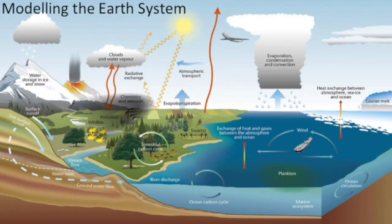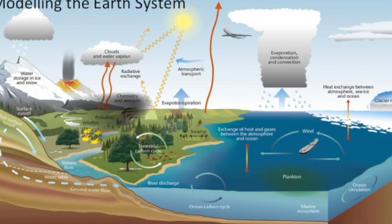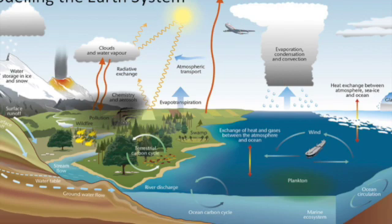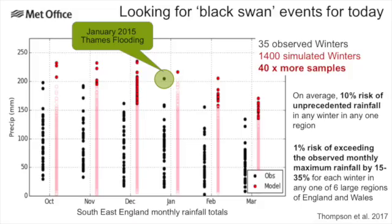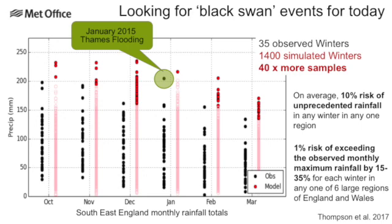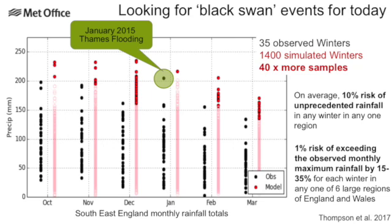From this diagram we were able to say that on average there is a 10% risk of unprecedented rainfall in any winter in any one region of the UK — dividing the UK into six regions — and a 1% risk of exceeding the observed monthly maximum rainfall by 15 to 35% for each winter. Here we're quantifying risk not from climate change, but from the natural variability of weather and climate.